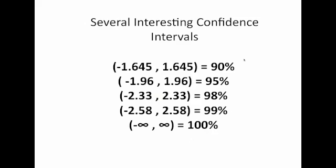In this course, there are going to be several interesting confidence intervals. One of these is negative 1.645 and 1.645. Between the Z-score of negative 1.645 and 1.645, we trapped 90% of the data. Another interesting is negative 1.96 and 1.96, we trapped 95%. Between negative 2.33 and 2.33, we trapped 98%. And between negative 2.58 and 2.58, we trapped 99%.